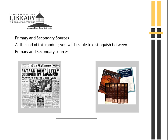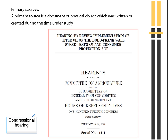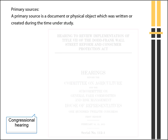At the end of this module, you'll be able to distinguish between primary and secondary sources. A primary source is a document or physical object which was written or created during the time under study.